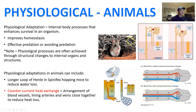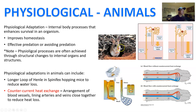Here's the Spinifex hopping mouse — it lives in Central Australia in Spinifex grassland. One interesting trait is that the kidneys have a really long loop of Henle. A regular loop of Henle is shown here, and then here's the loop of Henle of the Spinifex hopping mouse. What the loop of Henle does is retain water — the longer the loop of Henle, the better the water retention abilities. The Spinifex hopping mouse has the best water retention ability of any small mammal in the world because of this really long loop of Henle.